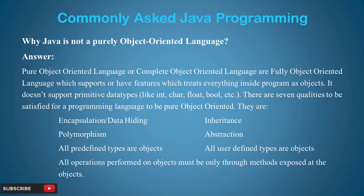As you can see, there are seven qualities that make any language fully or purely object oriented. Java also supports objects, but everything inside the code is not an object. As clearly explained, Java does not support primitive data types as objects — we can take characters and integers which are not treated as objects. That is why Java is not a purely object oriented language.